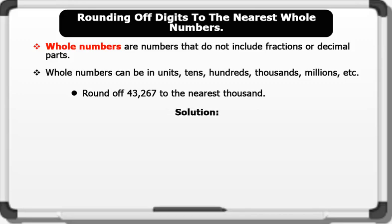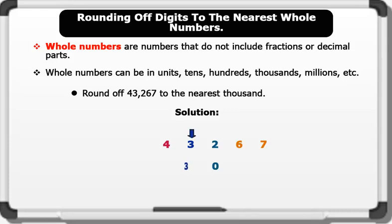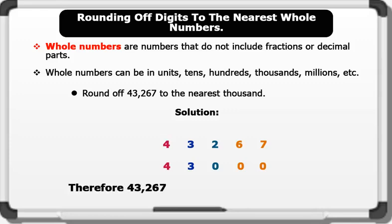Solution: to round off 43,267 to the nearest thousand, we identify the target, which is 3. The digit after the target is 2, which is less than five, so we round down to zero and keep the target the same. Other digits after the target are replaced with zero, and the digit before the target is kept the same. Therefore, 43,267 rounded off to the nearest thousand gives us 43,000.